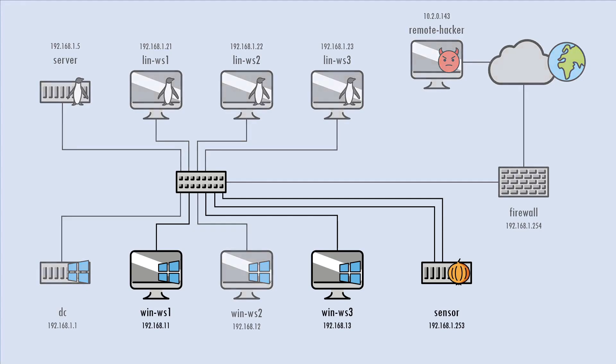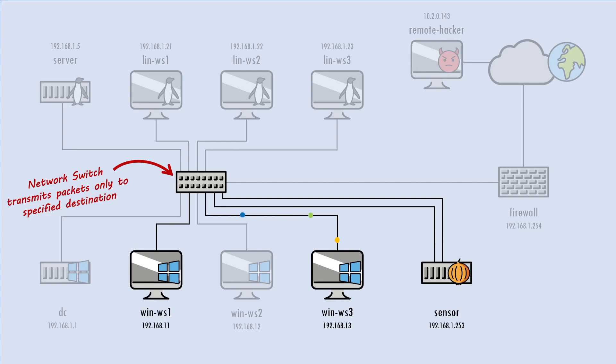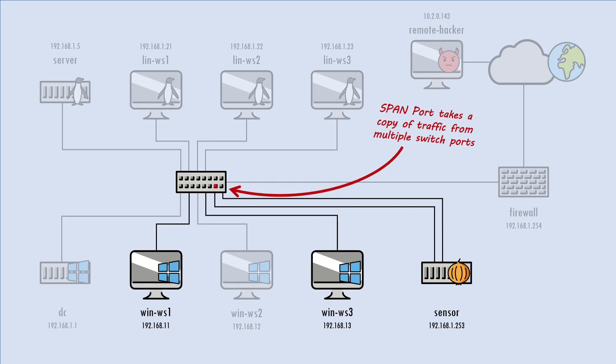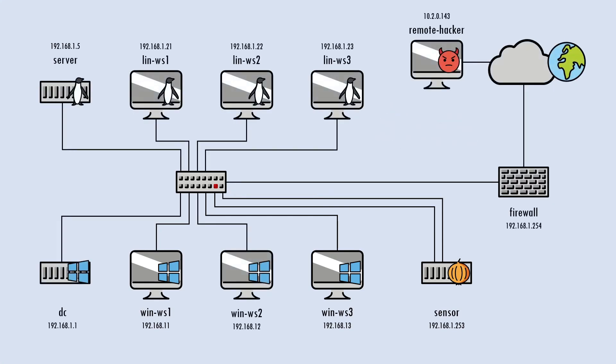In most real environments you'll have multiple sensor interfaces covering different network segments. Physical networks are nowadays almost always connected via a switch, which, if it sees a packet from Workstation 1 destined for Workstation 3, will only transmit on the physical port for Workstation 3, meaning our network sensor is blind if it's connected to a normal switch port. Either a hardware tap must be placed inline to take a copy of all packets flowing over a particular link, or a span port is configured on the switch to take a copy of all traffic flowing in and out of specific ports. However, it's important to be aware of bandwidth limitations — if multiple ports are transferring data at close to their maximum speeds, the span interface can quickly become saturated and the switch has no choice but to drop some traffic, leaving gaps in the sensor's visibility.